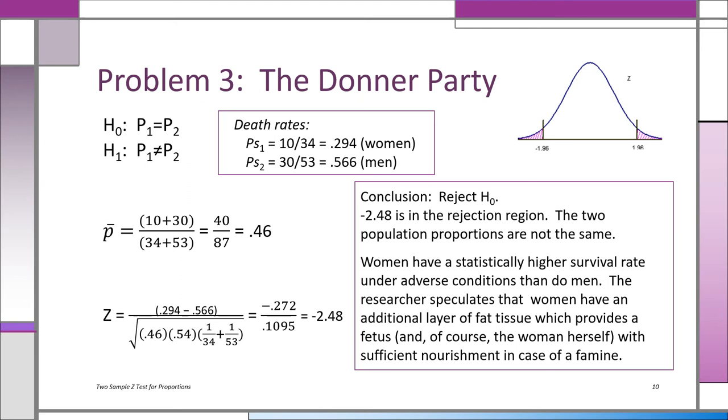Anyway, now we're going to do the problem. H₀ is that P₁ equals P₂. There's no difference in death rates when there's no food. Men and women have the same survivability, if that's a word. And the H₁ is that P₁ is not equal to P₂. Okay, we pool it. Pretend it's one group. H₀ is no difference. We combine the men and the women. There are 40 deaths out of 87 people, which is 0.46. Okay, that's p-bar. p-bar is 0.46.